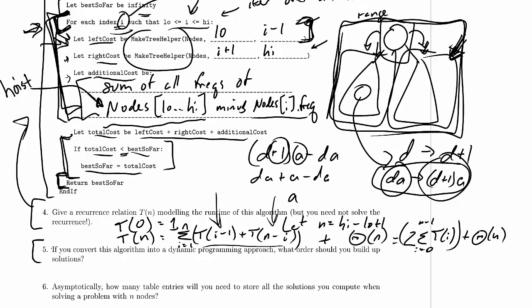We could easily turn this into a memoized approach just by storing the results each time we compute them, so we would never compute any result more than once. But if we convert this into dynamic programming, we're going to have to rearrange the order that we solve subproblems.